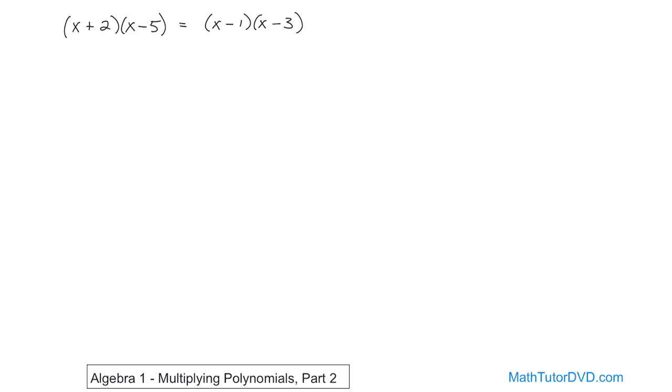But when you see these binomials multiplied together like this, you immediately know you can multiply them. And what you're going to do is multiply and then expand everything, collect all of the like terms, and then move all of your x's off to one side and then solve it. So this is an equation that requires you to multiply these binomials first.